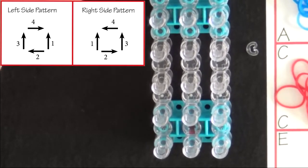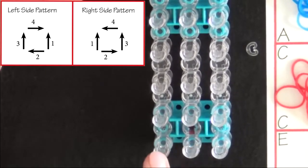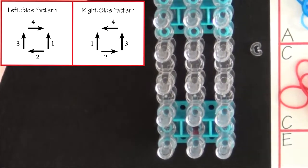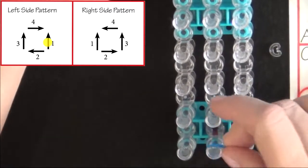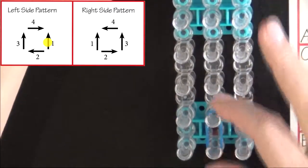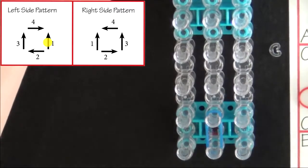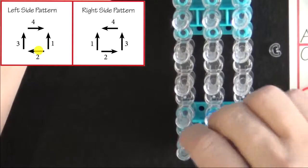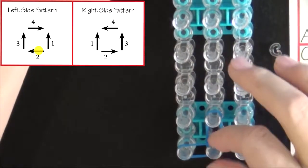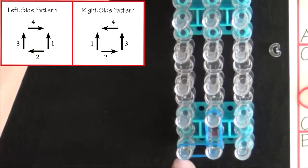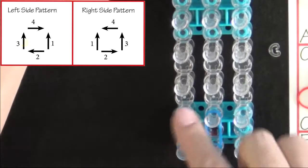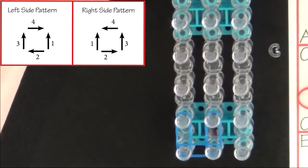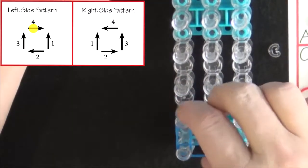We'll start from the center pin and follow the left side pattern using A colored bands. Start from the center pin and place your first A colored band up the center of the loom. The second band you place will be to the left. This is a left side pattern. Third band will be placed up the left side. And the fourth band will be placed back to the center.